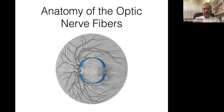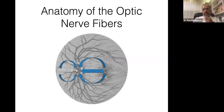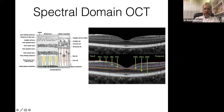The macular fibers coming from the temporal side to the fovea go to the superior and inferior aspects of the optic nerve. We have the papillomacular bundle, responsible for central vision, which goes directly from the fovea to the optic nerve. The nasal retinal fibers go to the nasal side of the optic disc. With new segmentation algorithms, we are now able to segment all retinal layers, study them in detail, and measure them.